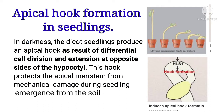In darkness, dicot seedlings produce an apical hook as a result of differential cell division and extension at opposite sides of the hypocotyl. This hook protects the apical meristem from mechanical damage during seedling emergence from the soil.